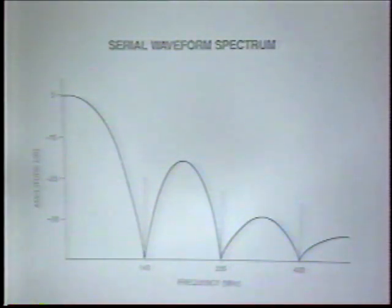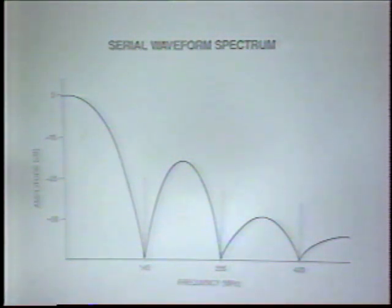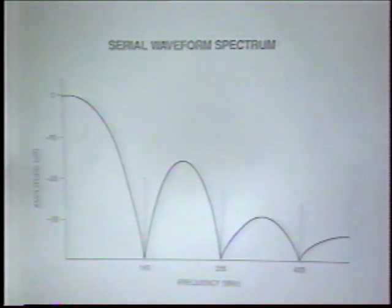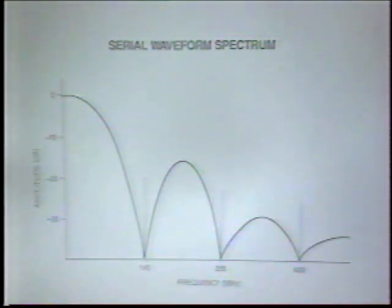Now let's look at a frequency domain aspect. This chart shows the spectrum of the serial signal. There is a null at 143 megahertz and at its harmonics, because if you have all ones you have a square wave at one-half of 143 megahertz, and a perfect square wave would have no second harmonic — hence a null at 143. In practice, the rise and fall are slightly non-symmetrical, so you get a small spike at 143 megahertz.